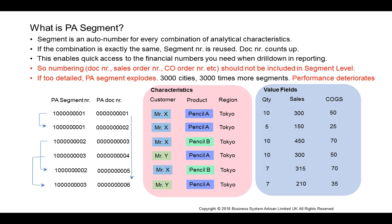Why is this necessary? A PA segment enables the reporting of financial figures like quantity, or the sales amount, or the cost of goods sold. When you do drill-down reporting, you want to know how much was sold to who, or what was sold — you need to know the separate amount, then you need a PA segment.